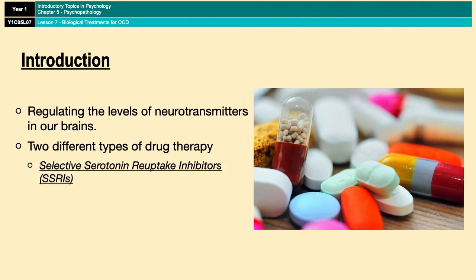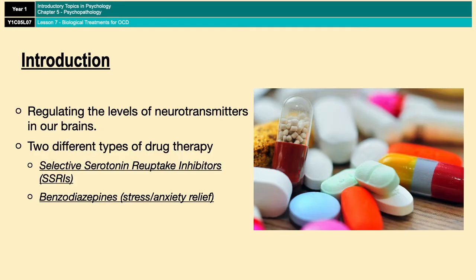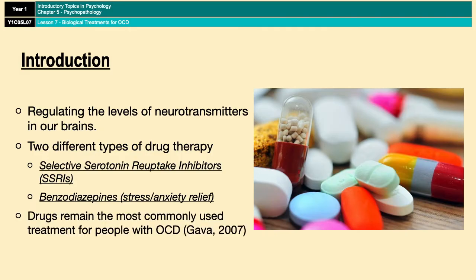The first form is a type of antidepressant called selective serotonin reuptake inhibitors, or SSRIs for short — and it is okay to use the abbreviation in essays and exam questions. The second form of drug therapy is a category of anti-anxiety medication called benzodiazepines. There are a number of biological treatments used with people with OCD, including things like deep brain stimulation, which is a fairly new technique. However, for many patients, drug therapy still remains an easy, accessible, and cost-effective way of dealing with their obsessions and compulsions, and it's still one of the most commonly used treatments for OCD.